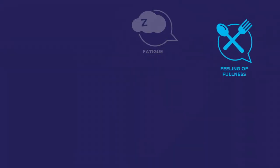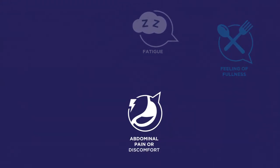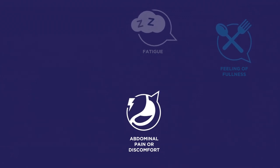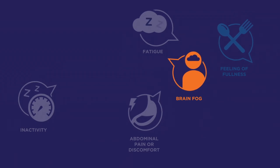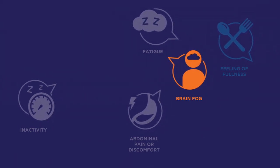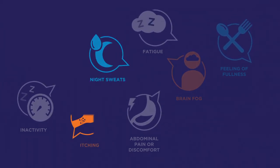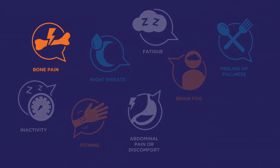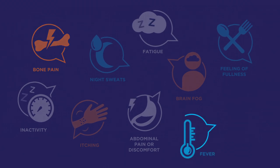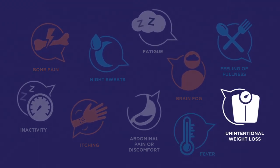Common symptoms of PV include fatigue, filling up quickly when you eat, also called early satiety, which can be associated with an enlarged spleen, abdominal discomfort, which can also be caused by enlarged spleen, inactivity, brain fog or trouble concentrating as compared to before your PV diagnosis, night sweats, itching also called pruritus, bone pain that's diffuse not joint pain or arthritis, fever higher than 100 degrees Fahrenheit, and unintentional weight loss within the last six months.